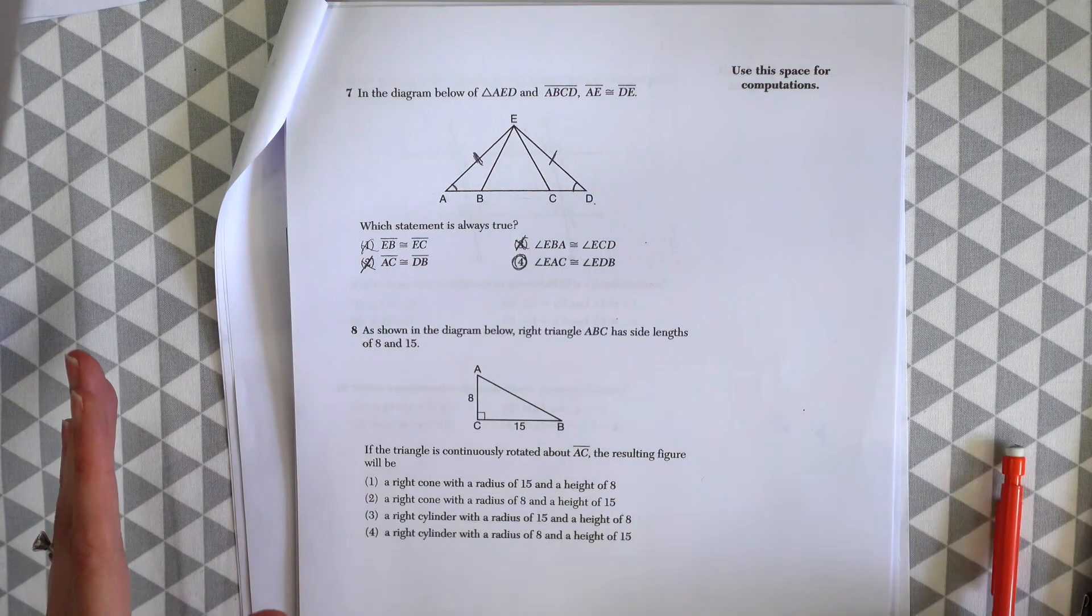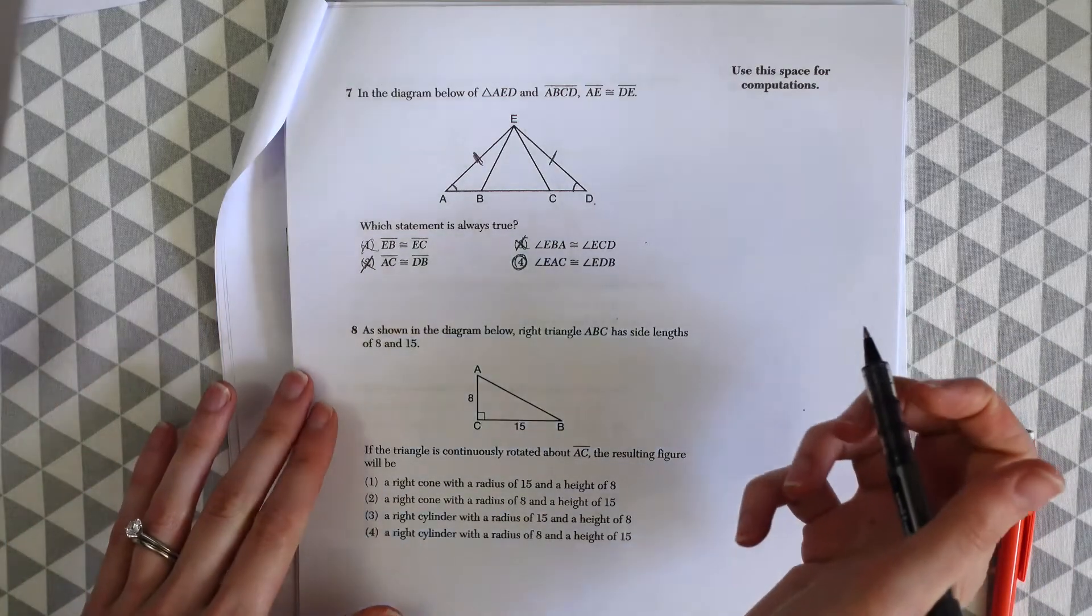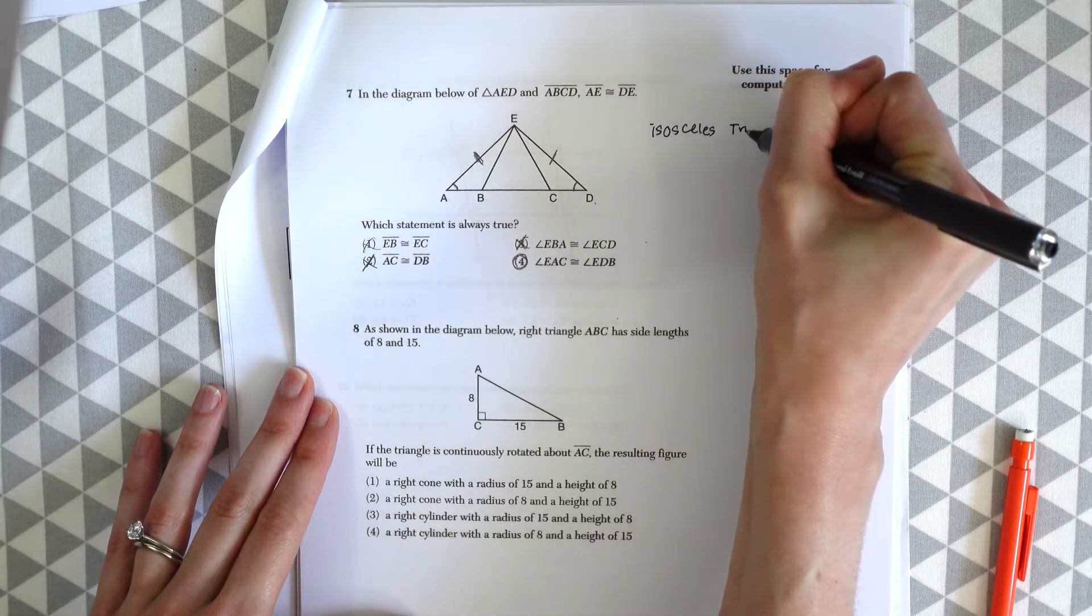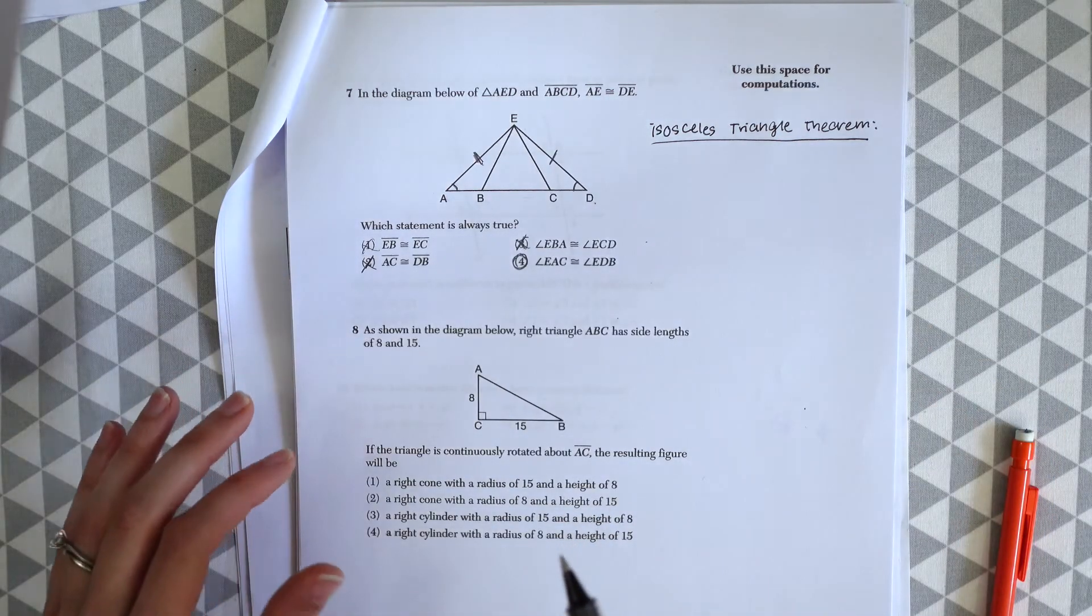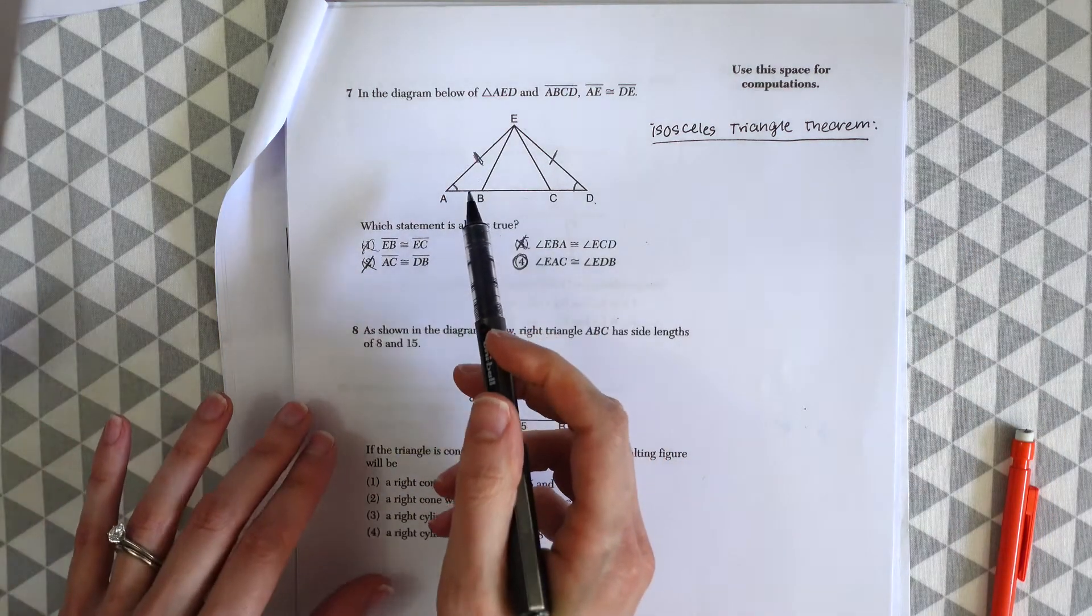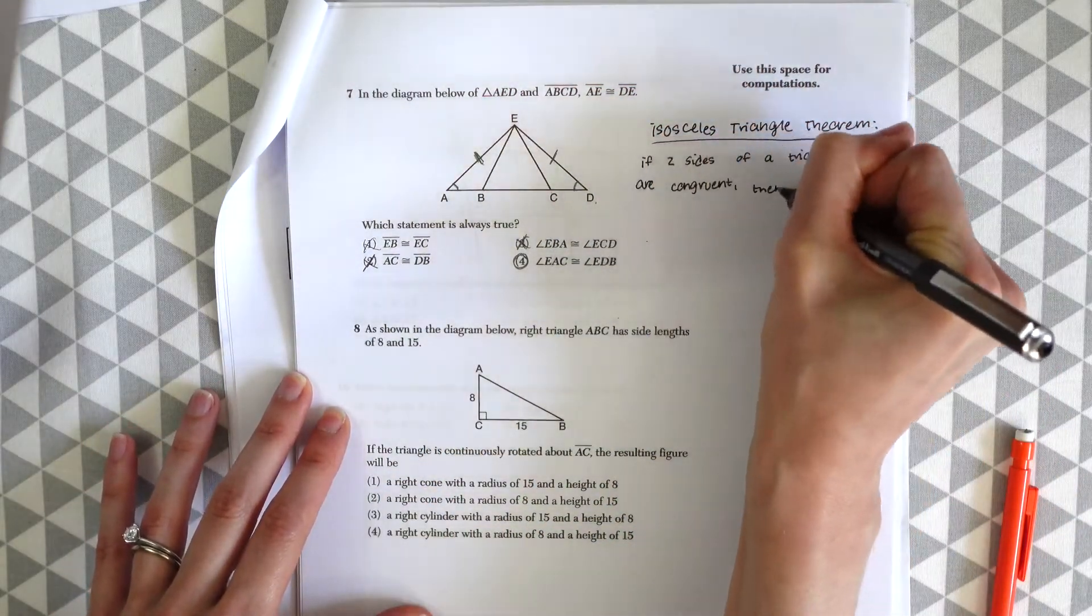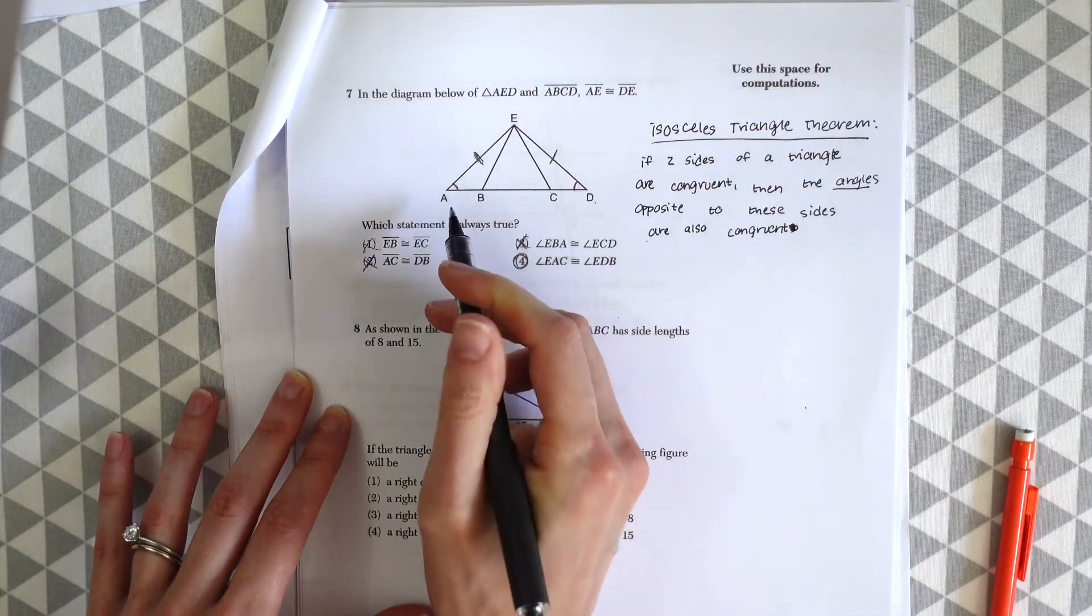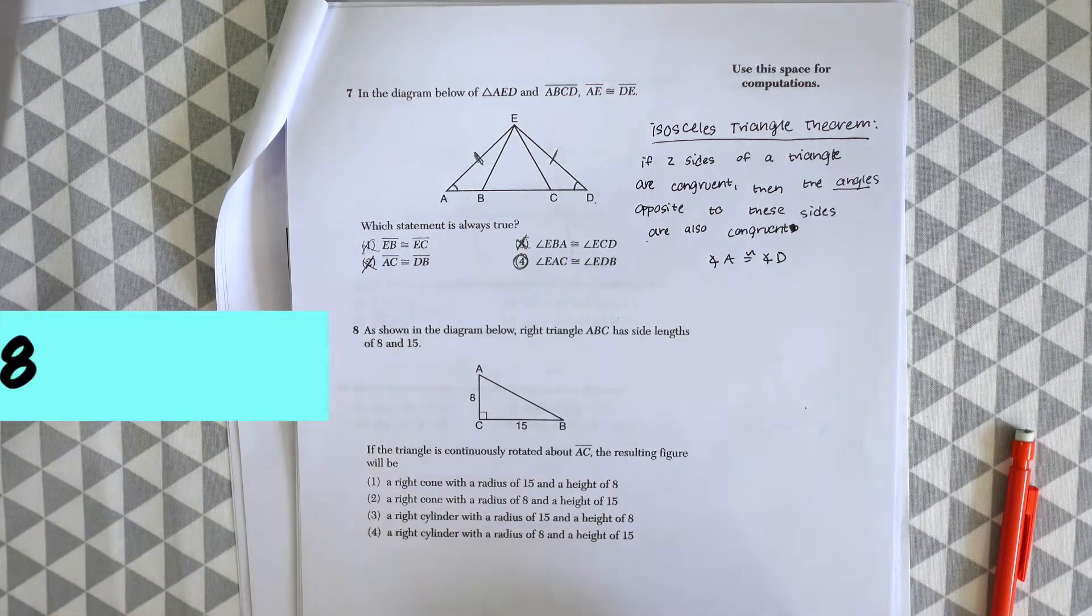And just to give you some background on why, this is based on the isosceles triangle theorem. And this tells us if two sides on a triangle are congruent, which they give us, then the angles opposite to these sides are also congruent. Which in this case is angle A to angle D. And that's our answer.